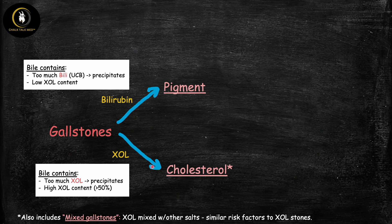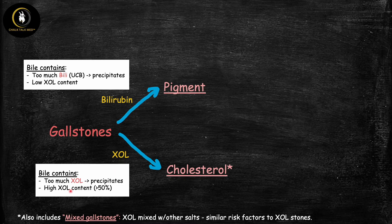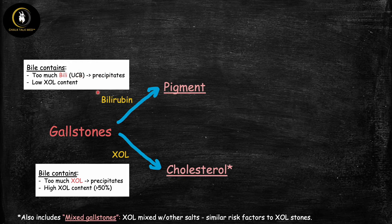Starting with the big picture: the more common type are cholesterol gallstones, which are made up of cholesterol — meaning the bile contains too much cholesterol, which precipitates and forms stones. On the other hand, pigment gallstones are made up mostly of bilirubin. Here the bile contains too much unconjugated bilirubin, which precipitates and leads to stone formation, and these stones have a low cholesterol content in contrast.